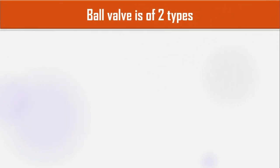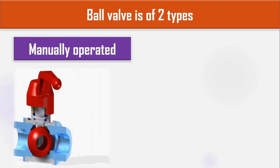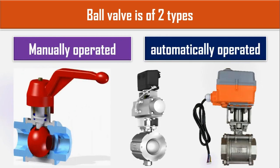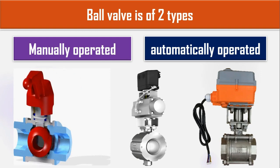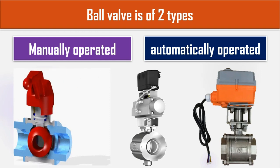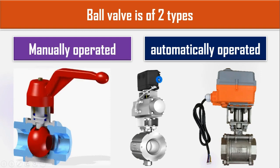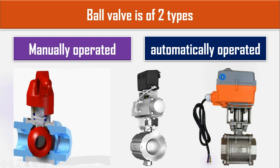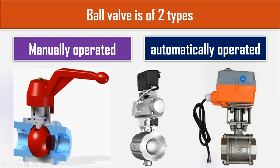Ball valve is of two types. The first one is manually operated and the other one is automatically operated. In automatically operated, we have two types: the first one is pneumatically operated and the second one is electrically operated.